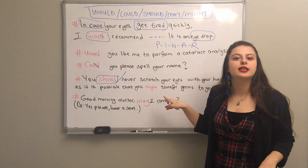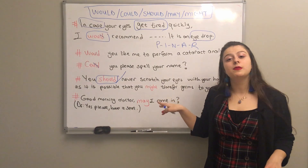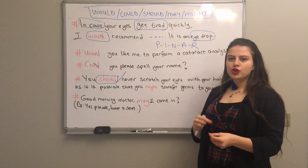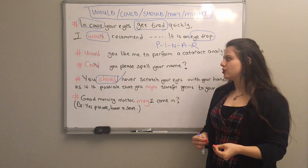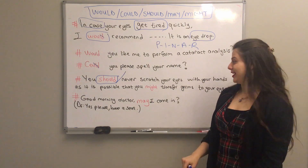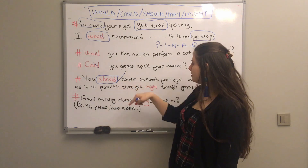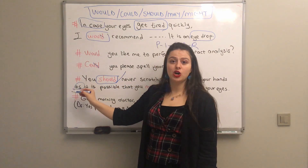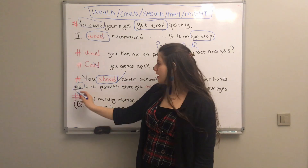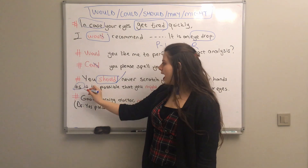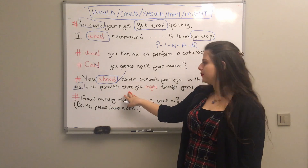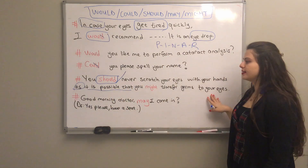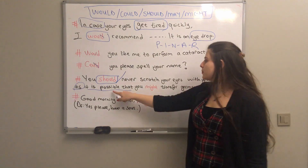You are giving advice to the patient: 'Never scratch your eyes with your hands because you have a possibility of transferring germs to your eyes.' In the second part of the sentence, 'as' is used as a conjunction — similar to 'because' and 'since' — meaning 'it is possible that you might transfer germs to your eyes'.